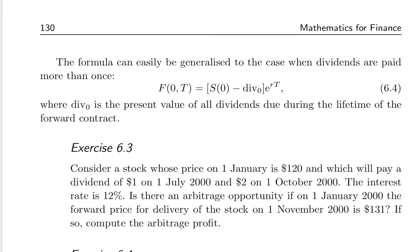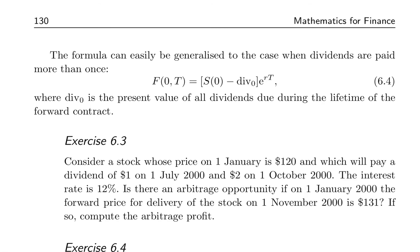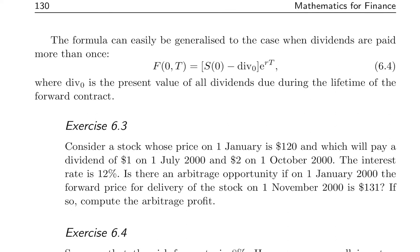The formula can easily be generalized to the case when dividends are paid more than once: F(0,T) = (S0 − div0) · e^(rT), where div0 is the present value of all dividends due during the lifetime of the forward contract.